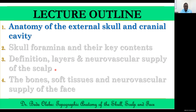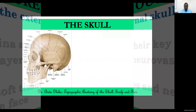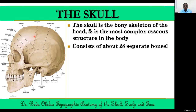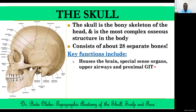Let's begin with the first agenda: the anatomy of the skull itself. The skull is the bony skeleton of the head region and is actually the most complex osseous structure in the body. In a child or newborn, if you pinpoint the separate osseous elements or the ones that will eventually become bone, we can count approximately 28 separate bones. Before going into the details, it's important to underscore the key functions of the skull.